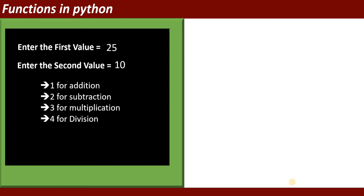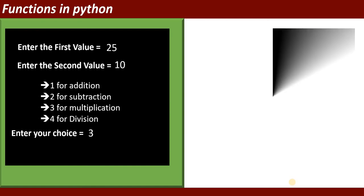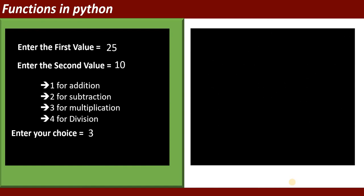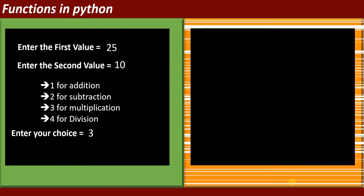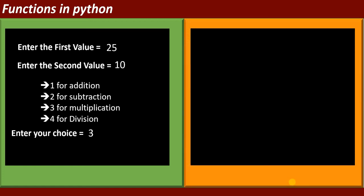If you enter more than four — means five and so on — it will show invalid input. Now suppose you enter choice number three. In choice number three, it should display the multiplication of A and B. Suppose value of A is 25 and value of B is 10 — it will show multiplication equal to 250.